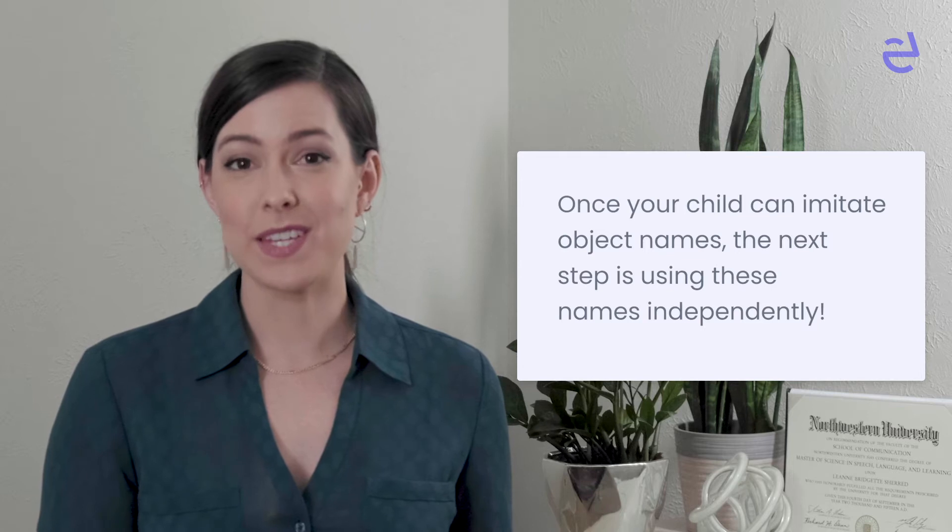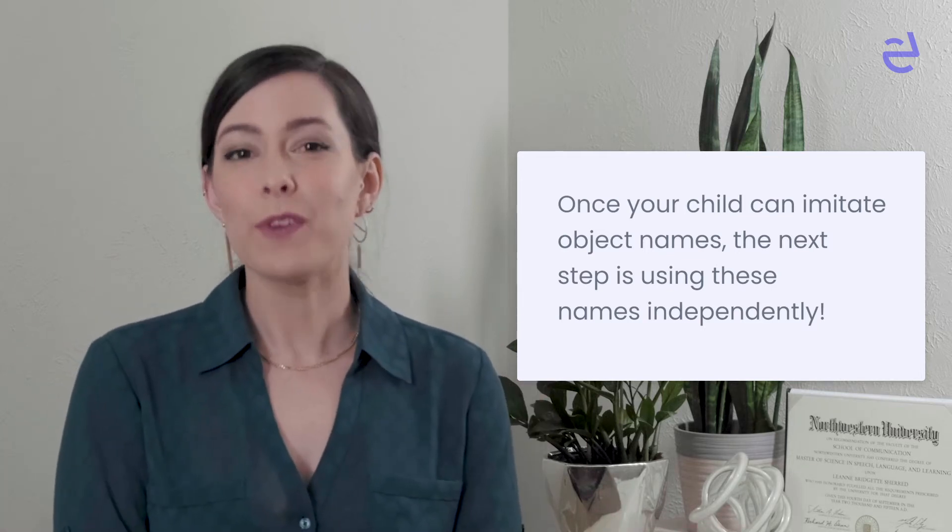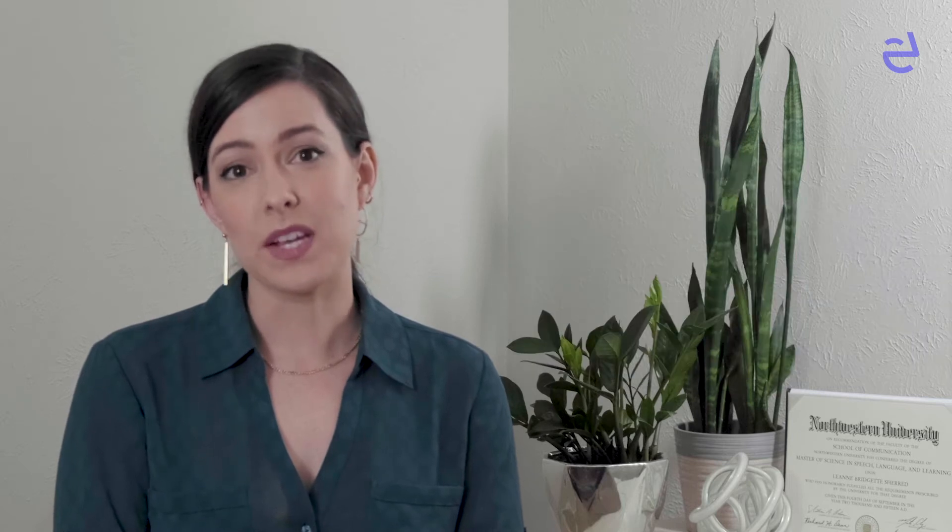You've helped your child imitate the names of objects. Now it's time to get them to name them independently. You will first want to start off by selecting objects they're familiar with. These can be things like household objects, clothing items, their favorite toys or animals, and transportation vehicles. Here are some ways in which you can target naming these objects.